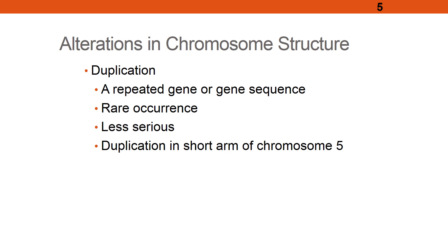One example of duplication involves the short arm of chromosome 5 — you may recall that deletion there causes Cri du Chat syndrome, which involves not only mental retardation but several physical abnormalities such as microcephaly. However, if duplication occurs in the short arm of chromosome 5, there will be no physical presentation, but the infant will still present with mental retardation.